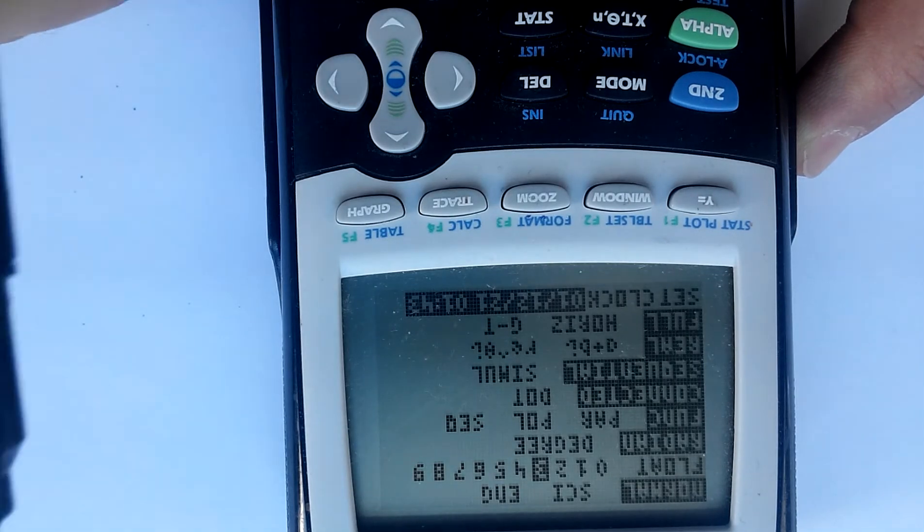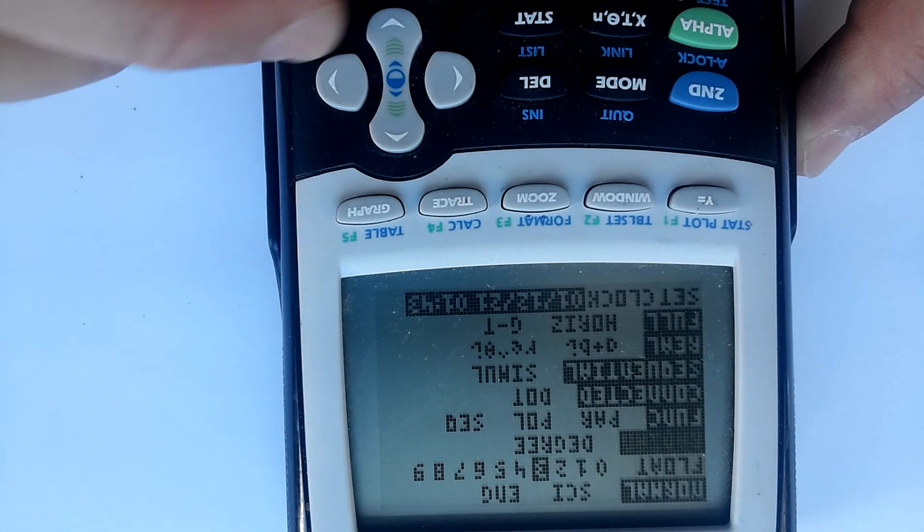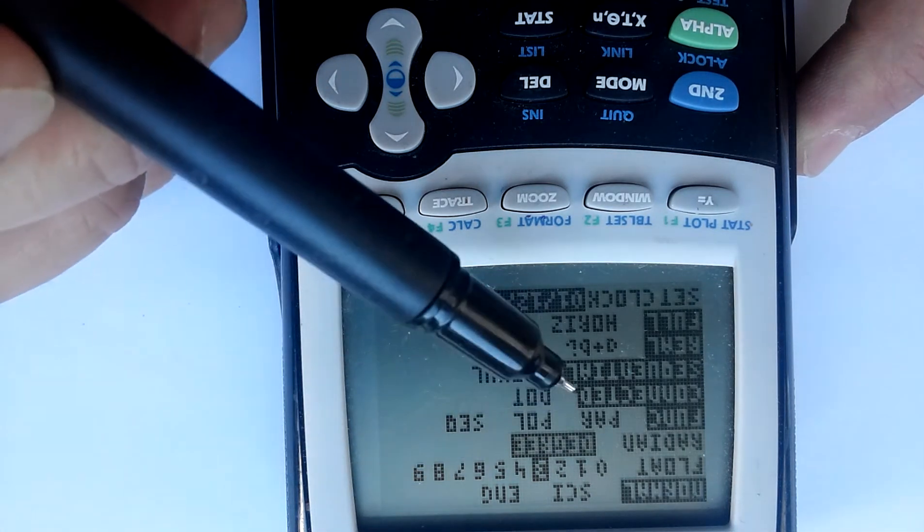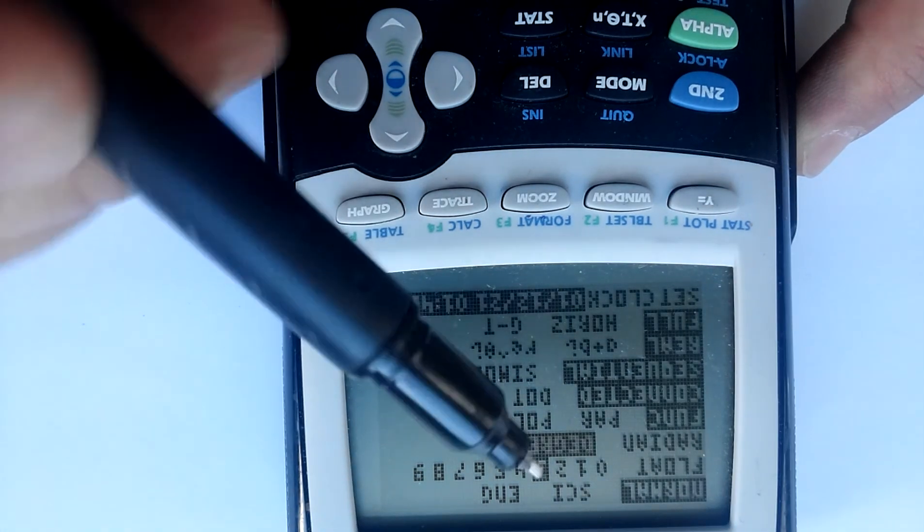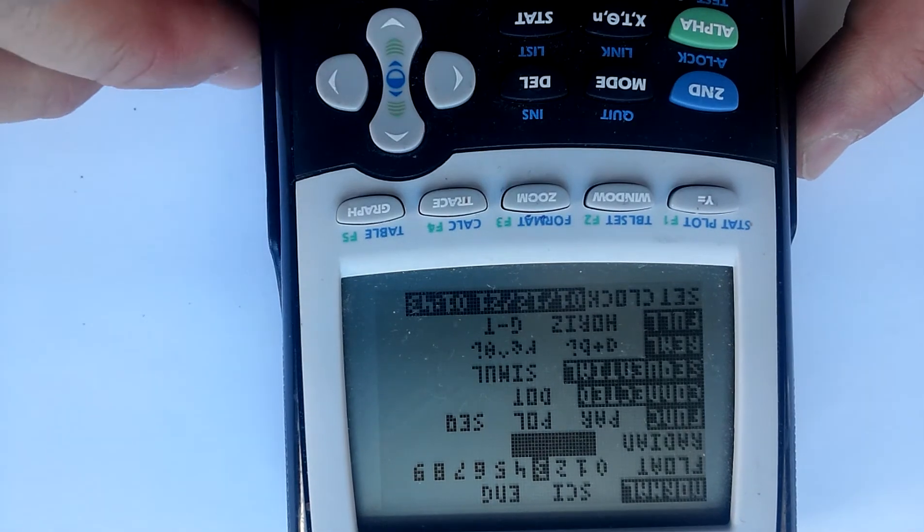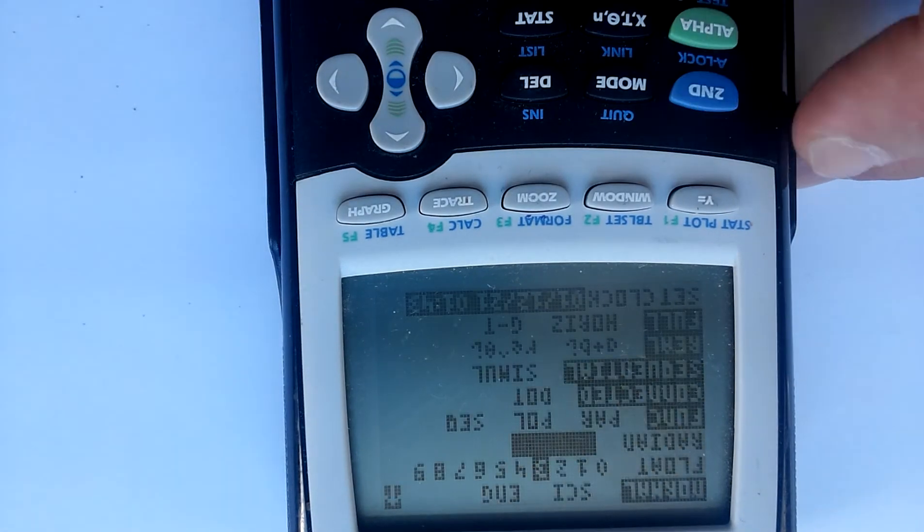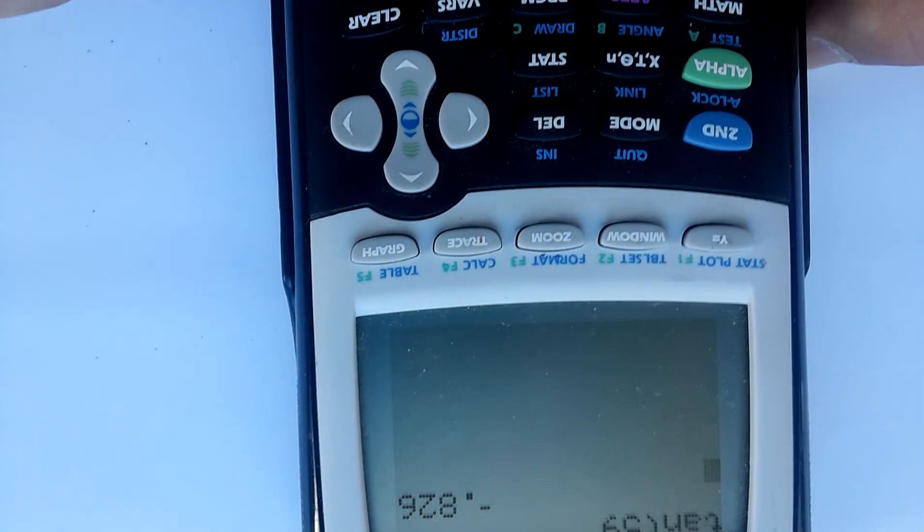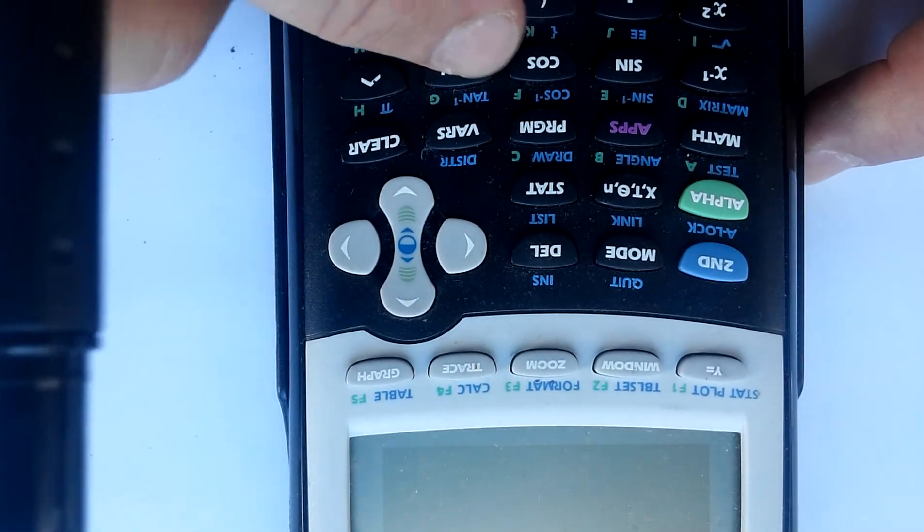So go ahead and click over there, and you want it to be on this setting where it says degrees. So let's do that. And let's start all over again. So hit the tangent button. So you'll hit the tangent.